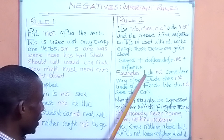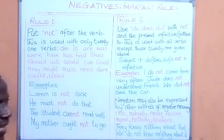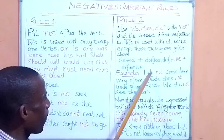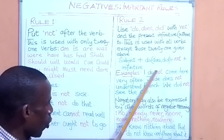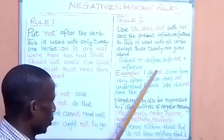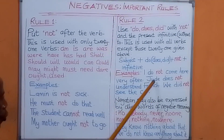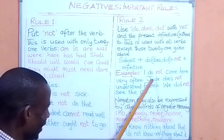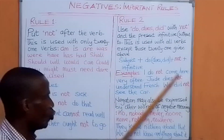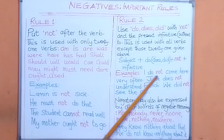Look at the examples. 'I do not come here very often.' That is a negative statement — 'I' is the subject, 'do' is the verb, then 'not'. Don't say 'I not do' — no. You say 'I do not.' Then: 'Jude does not understand French.' 'Jude' is the subject, 'does' is the verb, then 'not'. Don't say 'Jude not does' — say 'Jude does not understand French.' You have to put 'does' before you put 'not'.